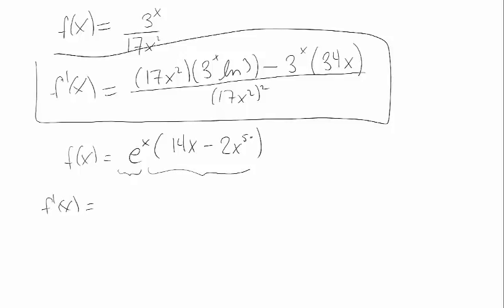Remember for the product rule, I take the first function times the derivative of the second function. 14x is a line. Its derivative is 14. To differentiate 2 times x to the 50th, I bring down the 50. 2 times 50 is 100. 50 minus 1 is 49. So I get 100x to the 49. So this is the first function times the derivative of the second function.